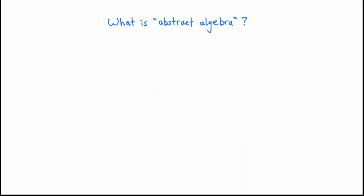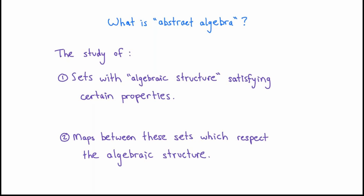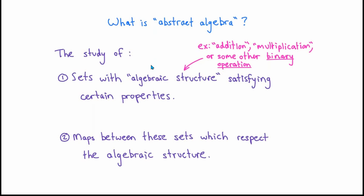So what is abstract algebra? One way to try to answer that question is to say that it's the study of two things: number one, sets with algebraic structure satisfying certain properties, and number two, maps between these sets which respect the algebraic structure. This is a somewhat vague description, so in order to make it a little more precise without giving the actual definition — what exactly do we mean by algebraic structure? We could mean that there's some rule like addition or multiplication, or maybe some other more abstract binary operation which takes two elements of our set and produces another element.